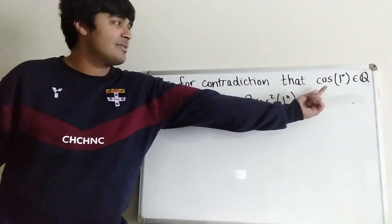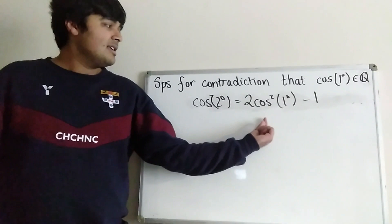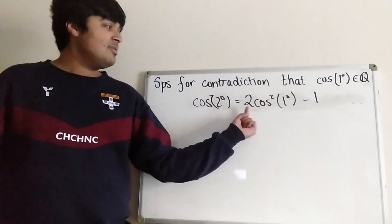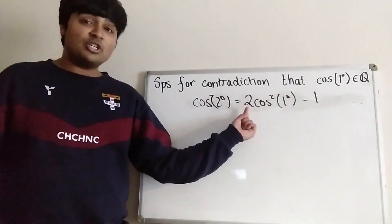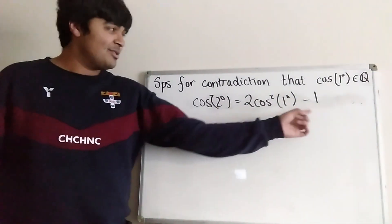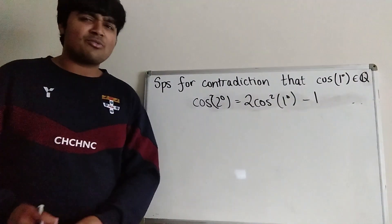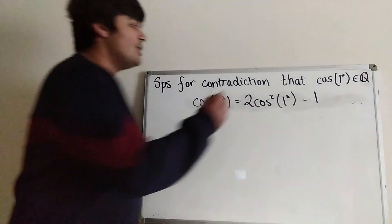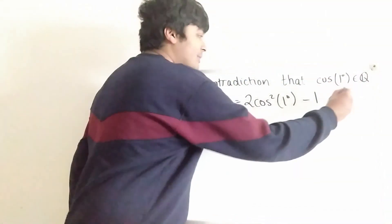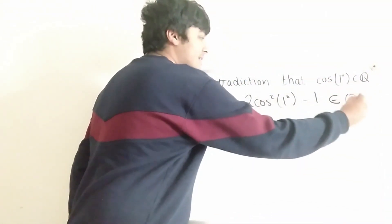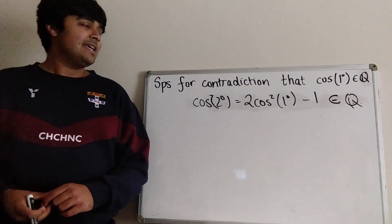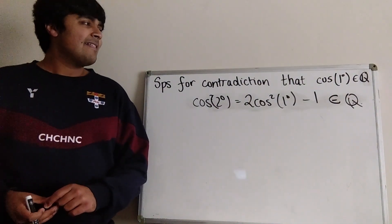Now cosine of one degree is rational, so when we square it we get something rational. Multiply by two, we get something rational. And then subtract off one, we're going to still stay rational. So all in all, this is a rational number as well — so cosine of two degrees is rational.